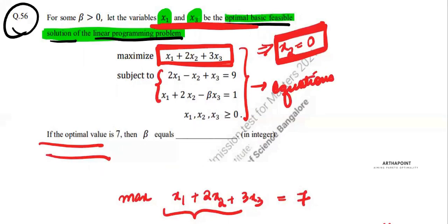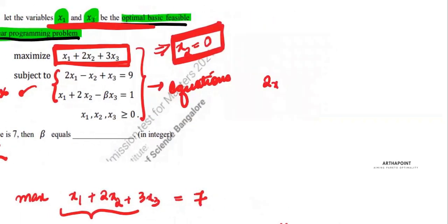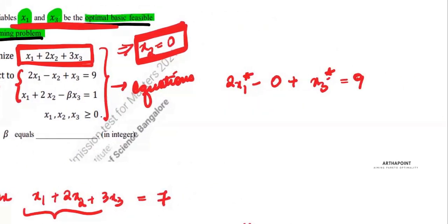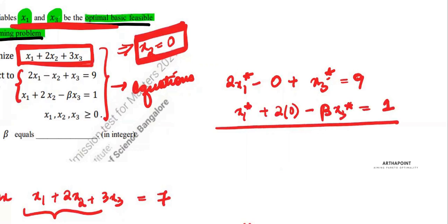Now, whichever values maximize the solution must also satisfy the constraints. So my constraints, with x2 equal to 0, give: first constraint: 2x1 star plus x3 star equals 9. Second constraint: x1 star plus 2 times 0 minus beta times x3 star equals 1.